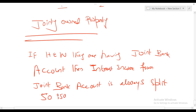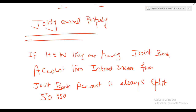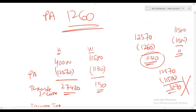For jointly owned assets, once actual ownership is declared to HMRC, income is split according to actual ownership. However, when it comes to a joint bank account, interest income is always split 50/50, regardless of who has more money in that account. No declaration of actual ownership can change the 50/50 split for joint bank account interest income.